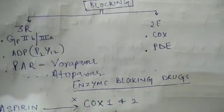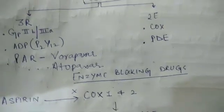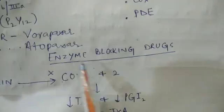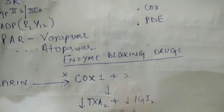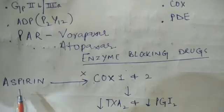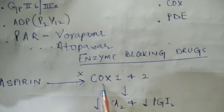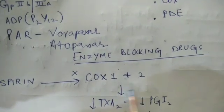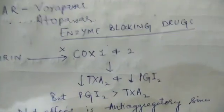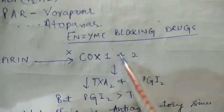These are the new drugs which recently came for blocking the protease activated receptors, also called thrombin receptors present on the platelet. First, we discuss the enzyme blocking drugs. The first drug which blocks the enzyme is aspirin. Aspirin blocks the COX enzyme - it blocks both COX-1 as well as COX-2.